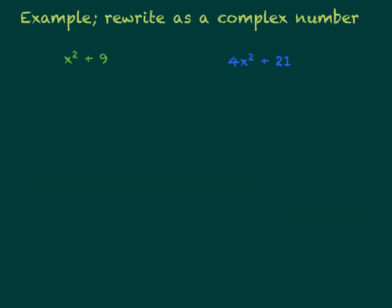Let's do some examples. Rewrite as complex numbers. All right, so we have x squared plus 9. So we know that we have x squared plus 3 squared, but it's a plus,